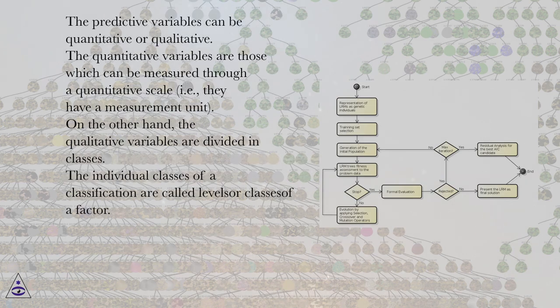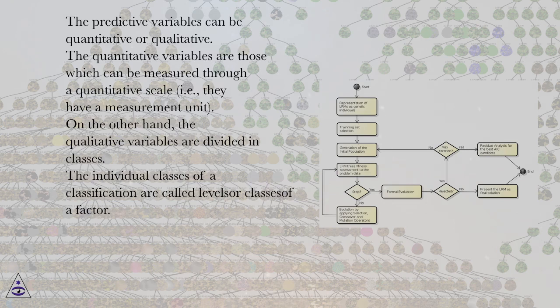The predictive variables can be quantitative or qualitative. The quantitative variables are those which can be measured through a quantitative scale, i.e., they have a measurement unit. On the other hand, the qualitative variables are divided in classes.